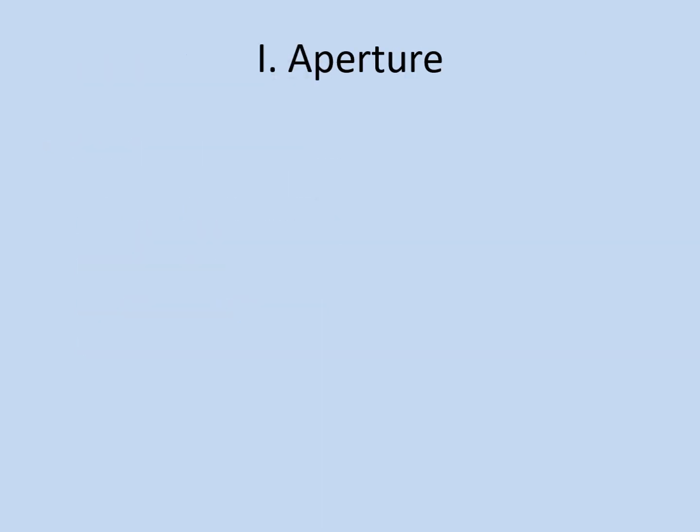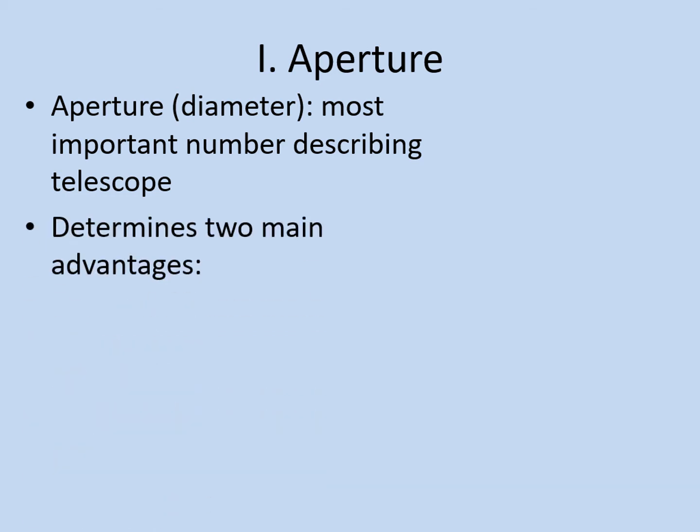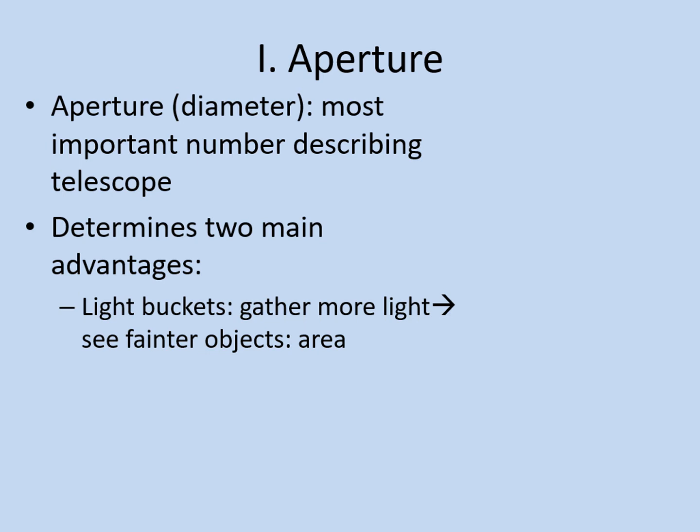As we've already mentioned, the aperture of a telescope — in other words, the diameter of the primary mirror or lens — is the most important number used to describe it. That's because the aperture impacts the most important advantages a telescope gives us. A telescope has to gather light to let us see faint objects, and the aperture determines how much light the telescope can gather. The bigger the aperture, the more light enters it, and the fainter the objects we can see.